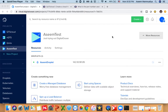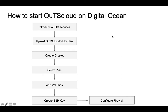We are just going to cover the basic single instance deployment of QTS Cloud on Digital Ocean. So let's get started. This is our flow that we are going to cover today for setting up the NAS on Digital Ocean. There are a few steps but they're very simple. First, I'm going to tell you a little bit about the Digital Ocean services, then uploading the VMDK image, then creating a droplet, selecting the plan, adding volumes, creating a SSH key, and configuring the firewall.